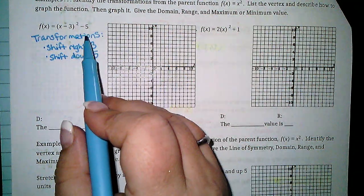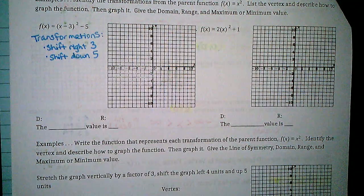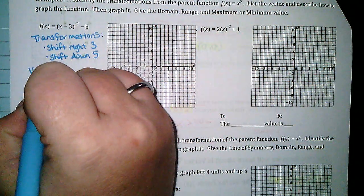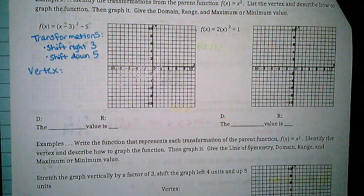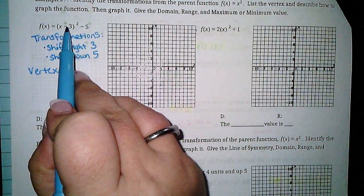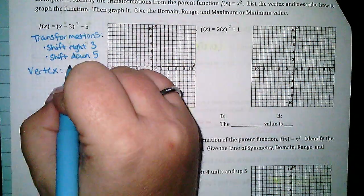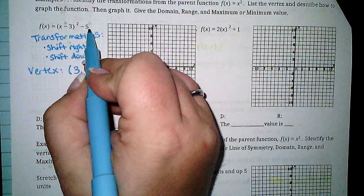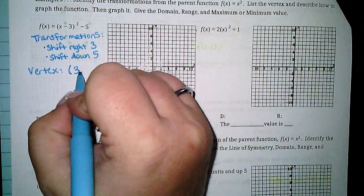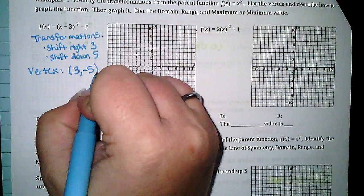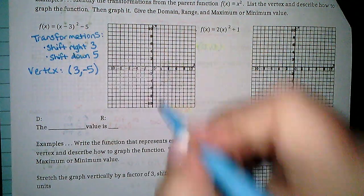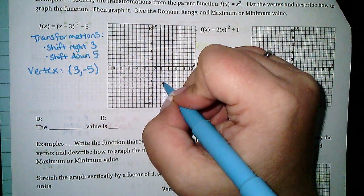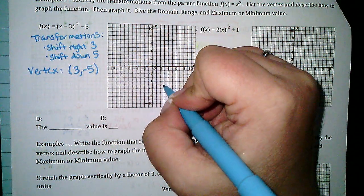The vertex: remember, it's opposite of the inside. It says negative 3, so it's going to be positive 3. Outside is the lazy one — it just stays the same. So my vertex is going to be at (3, -5).